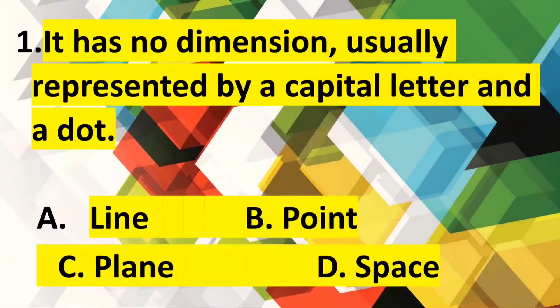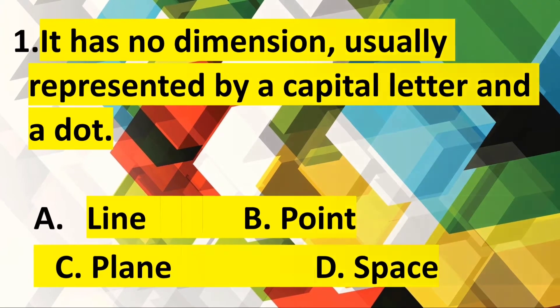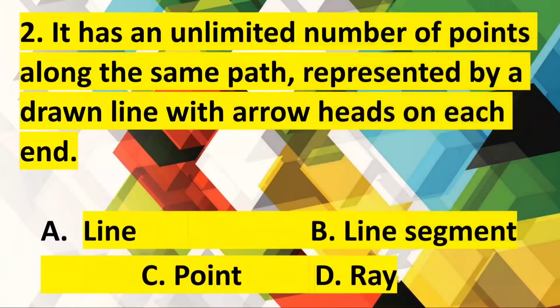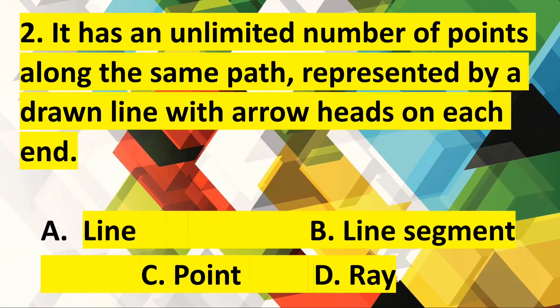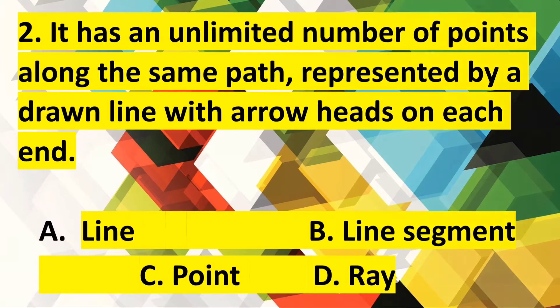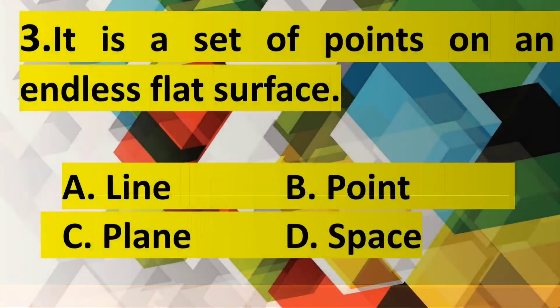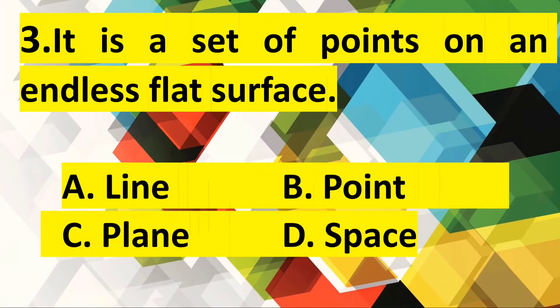Number one: It has no dimension, usually represented by a capital letter and a dot. Number two: It has an unlimited number of points along the same path, represented by a drawn line with arrowheads on its ends. Number three: It is a set of points on an endless flat surface.